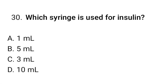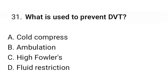Question number 30: Which syringe is used for insulin? The correct option is A: 1 milliliter. Question number 31: What is used to prevent DVT? The correct option is B: Ambulation.